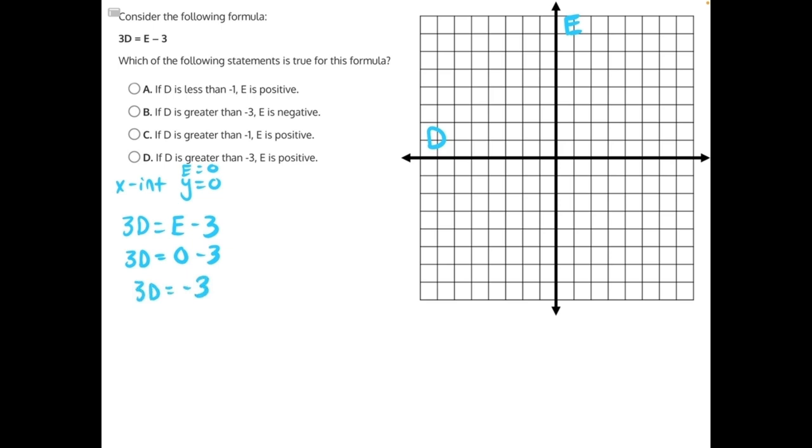And then we'll have to do opposite operations. 3 is being multiplied to D, so the opposite operation would be division. This will cancel, leaving us with D equals negative 3 divided by 3 is negative 1. So our first intercept is going to be negative 1 comma 0.